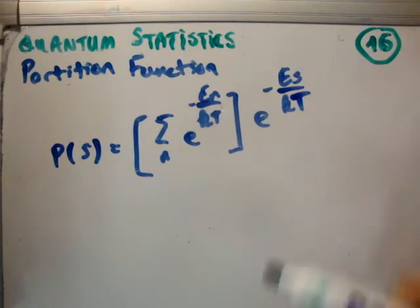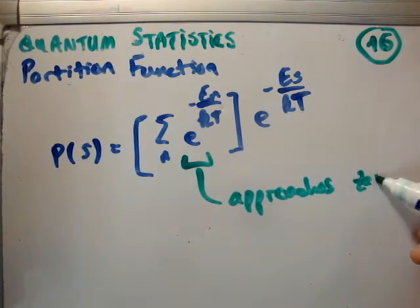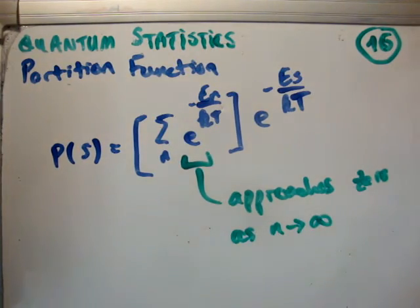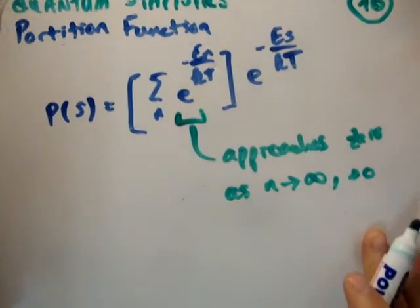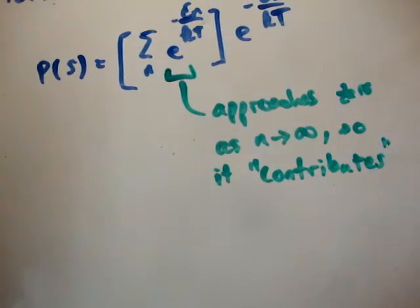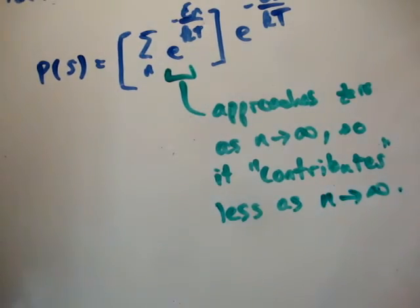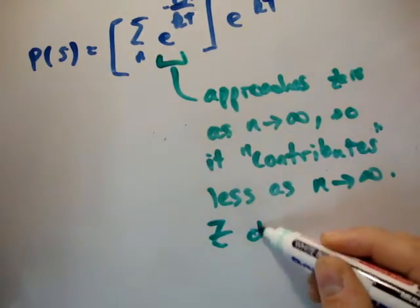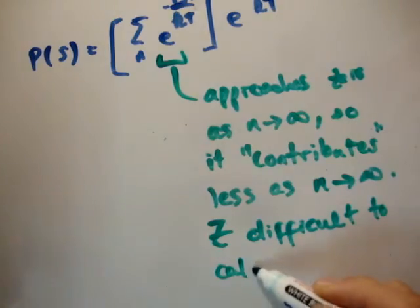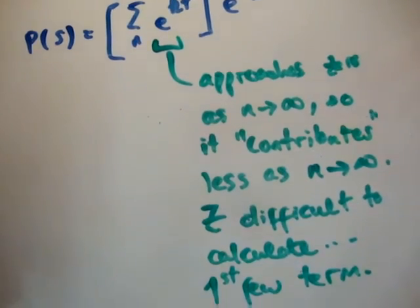Note that it approaches 0 as n approaches infinity. So it contributes less and less as n goes to infinity. It becomes less important as n goes to infinity. And for that reason, z is often difficult to calculate. So usually we only talk about the first few terms. Instead of calculating the whole of z, we calculate the first few terms because once we have the first few terms, we essentially have the whole thing.